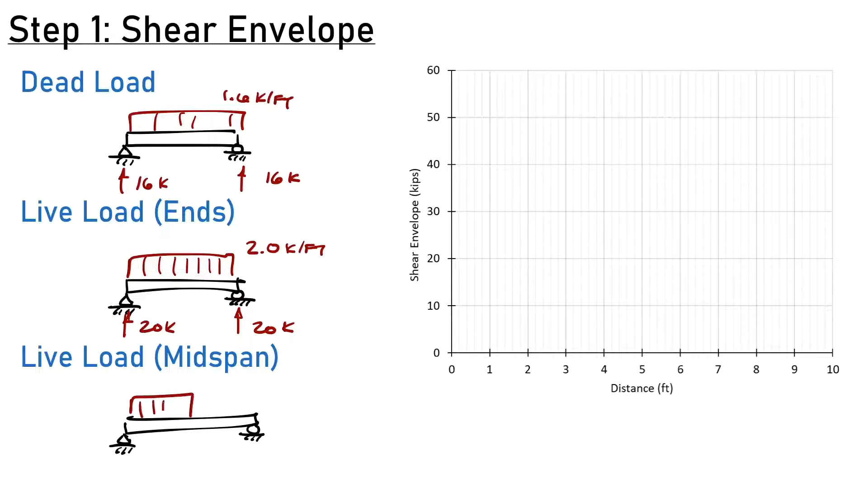If we load half the beam at 2.0 kips per foot and check the reactions, we'll find 15 kips at one end and a 5 kip reaction at the other. At this end, that's less shear than the fully loaded case which had 20 kips, but at mid span my shear is 5 kips, which is greater than the mid span shear of zero in the fully loaded case.